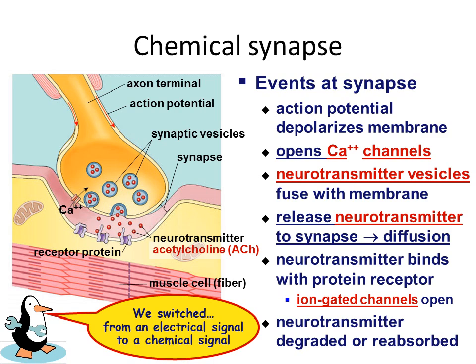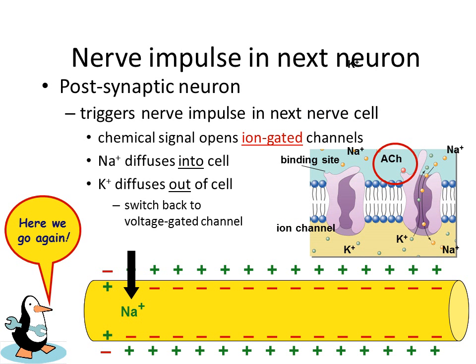The neurotransmitters diffuse across the synapse and bind with a protein receptor, causing a shape change in the next neuron which causes ion-gated channels to open and allow sodium to enter that next neuron. The neurotransmitters will then be degraded or reabsorbed if not used. The neurotransmitters trigger nerve impulses in the next nerve cell, called the post-synaptic neuron. The chemical signal causes ion-gated channels to open so that sodium can diffuse into the cell, and then potassium channels will open and diffuse out of the cell. When enough sodium has diffused into the cell, a nerve impulse can be sent down the line.